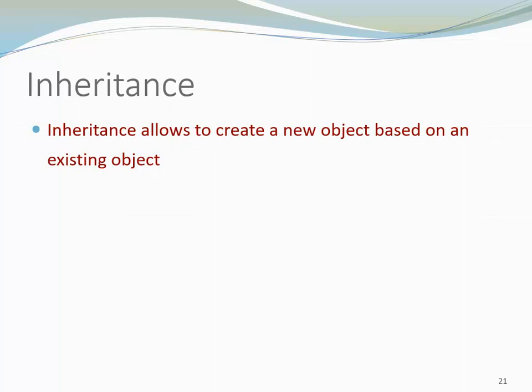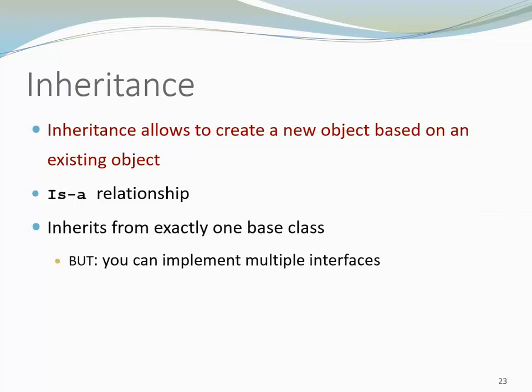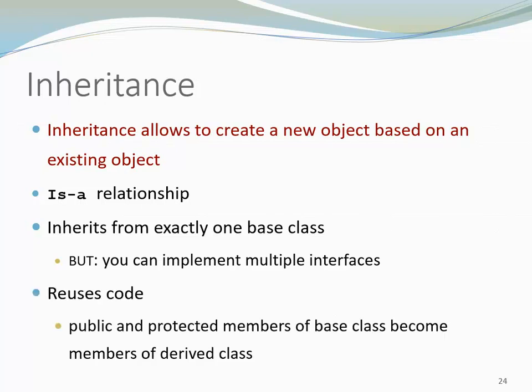Let's have a closer look at inheritance. Inheritance allows to create a new object based on an existing object. It describes an is-a relationship. C-sharp has single inheritance, just like Java. That means a class can only inherit from one single base class. It can implement multiple interfaces, though. Inheritance is a form of code reuse, because public and protected members of the base class become members of derived classes.